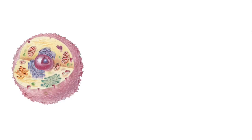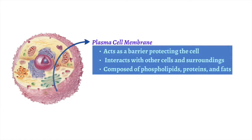Let's begin by talking about the plasma cell membrane. The plasma cell membrane is one of the most important components of the cell. The plasma membrane plays a vital role in acting as a selective barrier for the cell, regulating what enters and what exits the cell. In addition, it plays a vital role in signaling and interacting with other cells and its surroundings via various proteins and receptors that are embedded in the membrane. As a result of its diverse functions, the plasma membrane is composed of a variety of components, with phospholipids, proteins, and fats composing a large role of the plasma cell membrane.